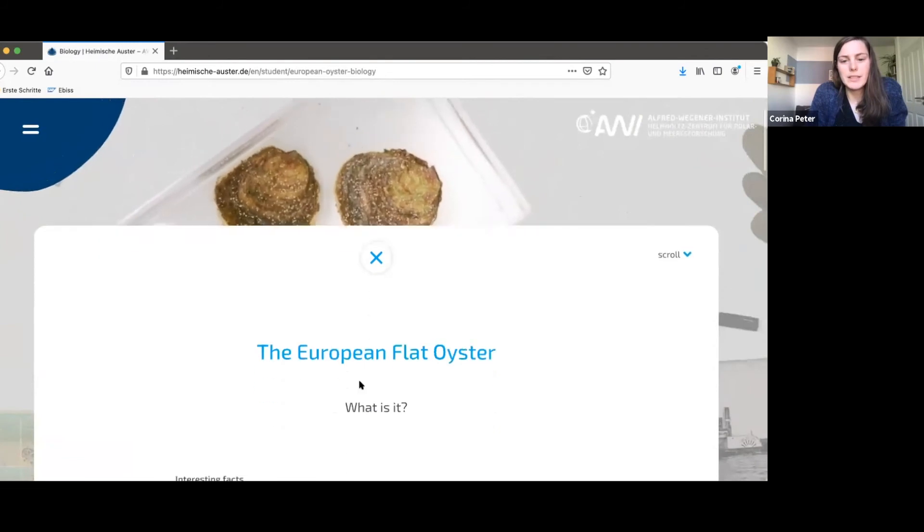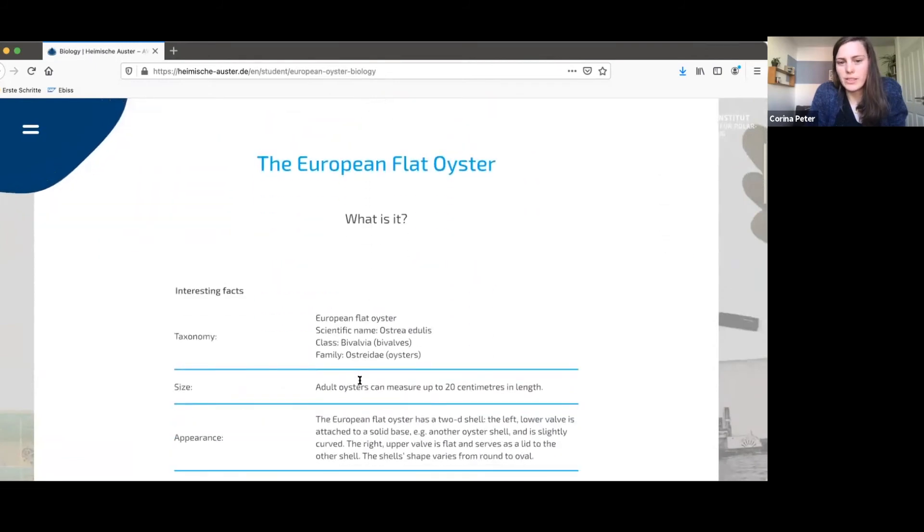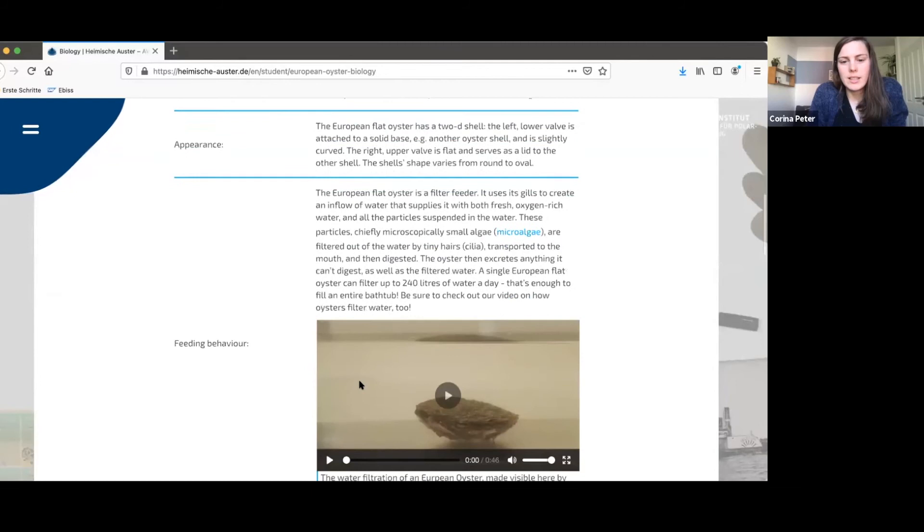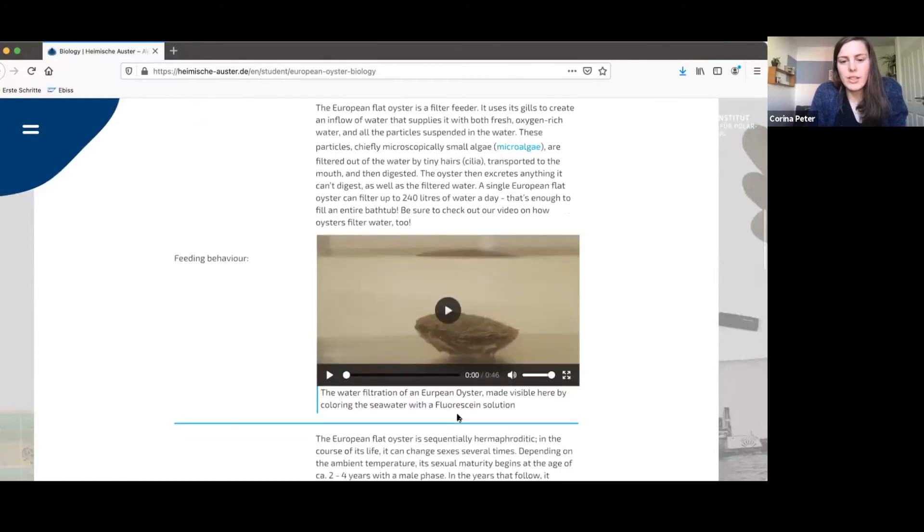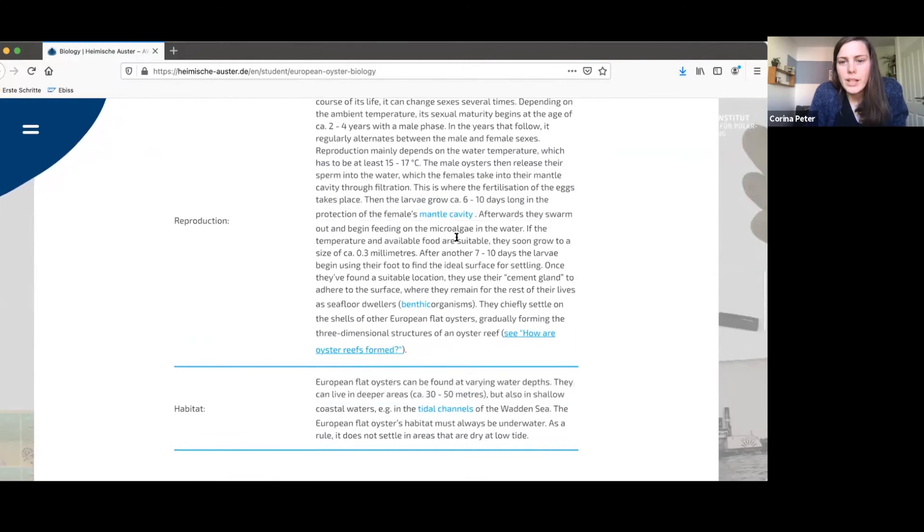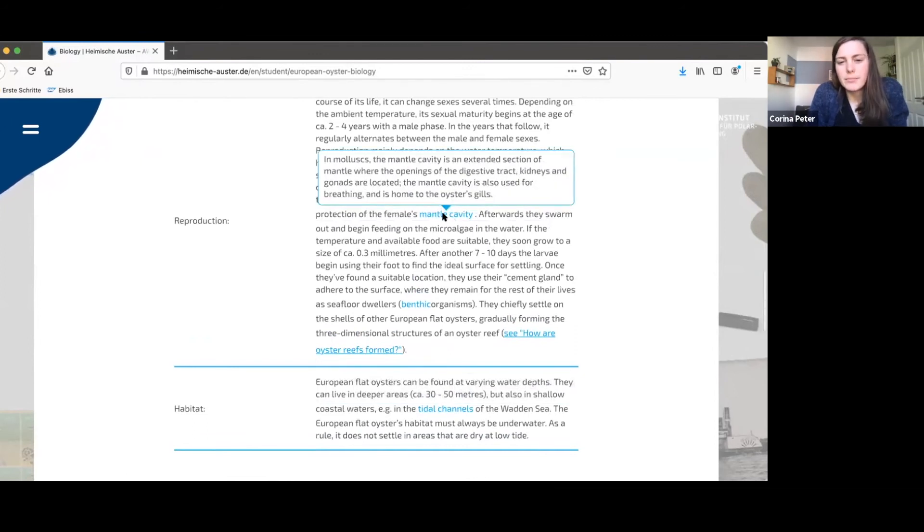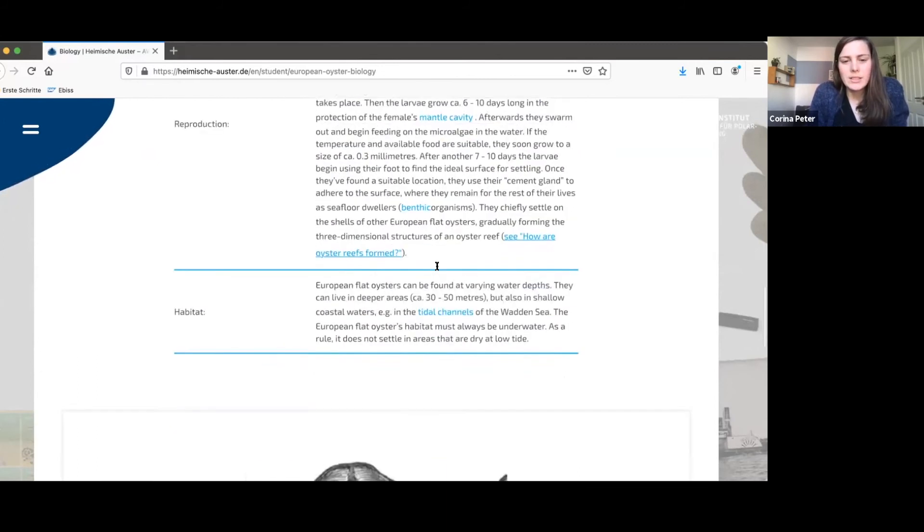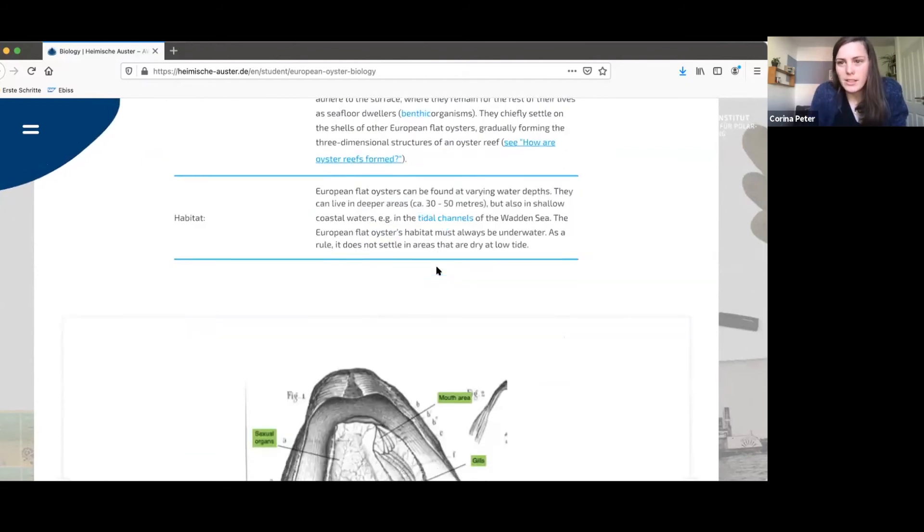And in the student version, for example, when you click on the biology one, then there comes the information about the European flat oyster. And there you have a little video showing the filtration. And if you scroll over those blue or green words, you have the definition of it, of the technical term. So you don't have to switch to Wikipedia all the time. You can just stay on our site.